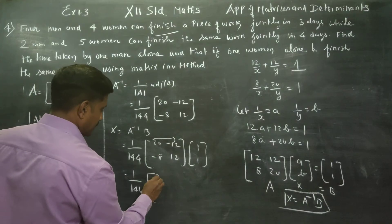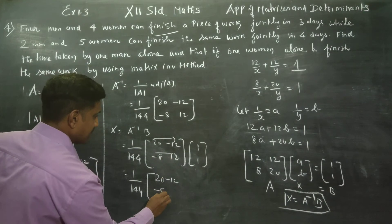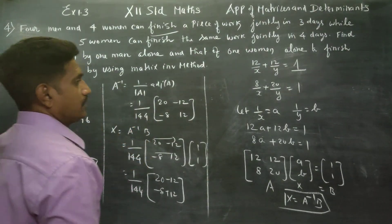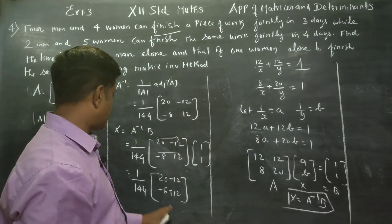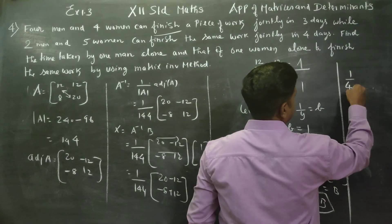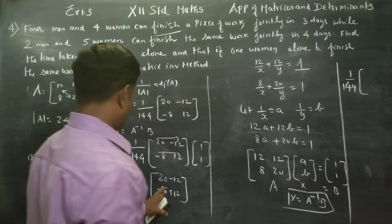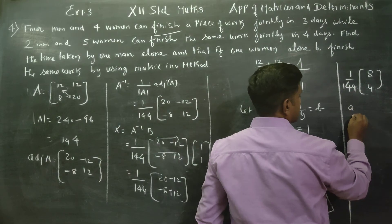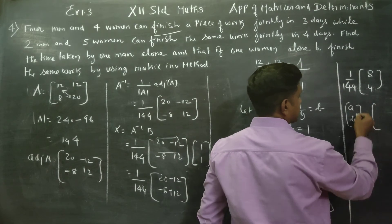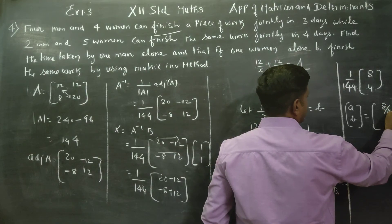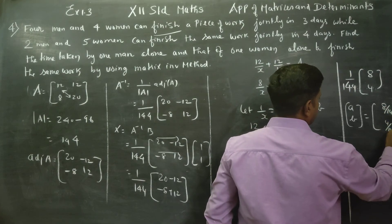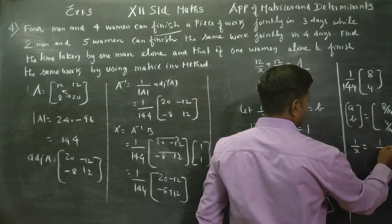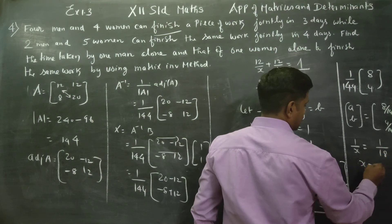Now multiplying: 20 into 1 minus 12 into 1 gives 8 for the first element. Minus 8 plus 12 gives 4 for the second element. So the result is 1 by 144 times [8; 4], which gives [8/144; 4/144]. Therefore 1 by x equals 8 by 144, which simplifies to 1 by 18, so x equals 18.